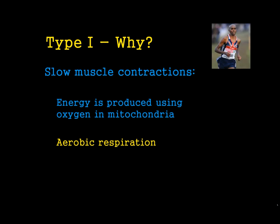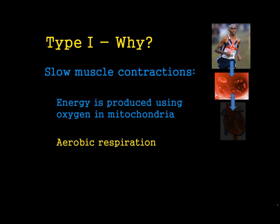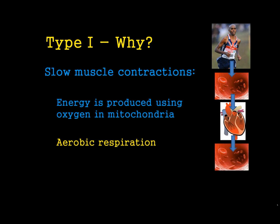This process is quite slow. For example, if we've got Mo Farah going for a run, he has to breathe the oxygen in. It has to pass through the lungs into the bloodstream, then pass to the heart, then pass through the blood and eventually reach the mitochondria in the muscle tissue. That's quite a long process, and that's why it's so slow for these muscles to contract. It also takes a lot of breakdown through the Krebs cycle in the mitochondria to actually produce the energy itself, so it's a very slow process — and that's why Type 1 muscle fibres are so slow.